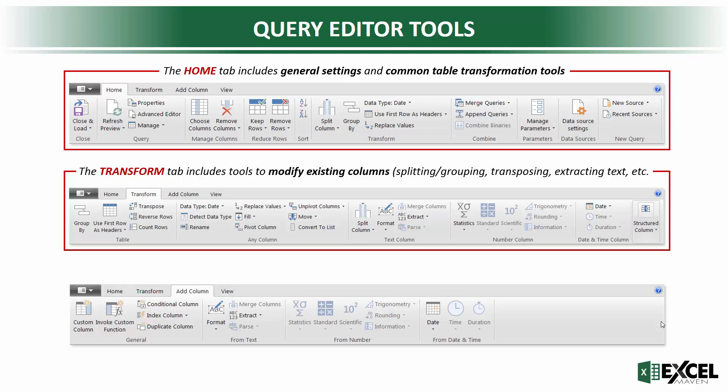The Transform tab includes tools that allow you to modify existing columns — it overwrites the data in an existing column. So you can split and group, transpose, extract text, use statistical functions, and so on.